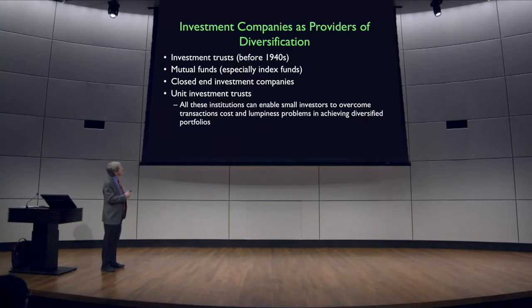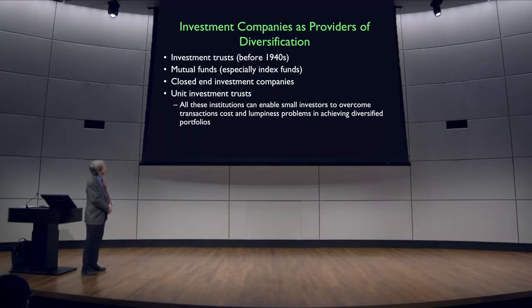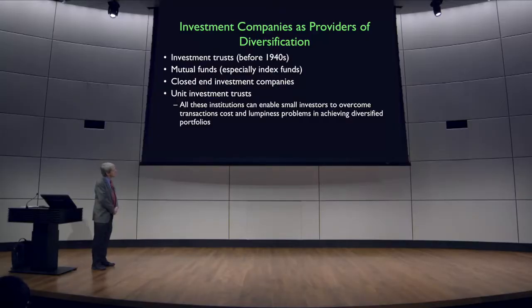Before the 1940s, we had what were called investment trusts. Later they became, in a different form, called a mutual fund. The first mutual fund is Massachusetts Investment Trust — MIT, not the institute — in the 1920s. But they didn't really take off until after the 1940s. A mutual fund or management company invests in your behalf in assets, and it's mutual in that it doesn't skim off profits to a class of stockholders — it's divided up equally among all the people who invest in the mutual fund. A mutual fund puts together assets, hopefully in a diversified manner.